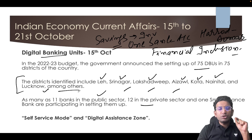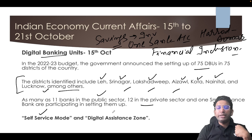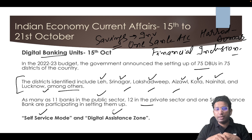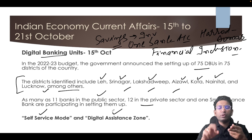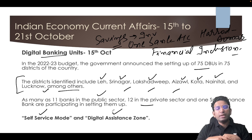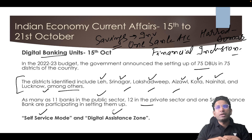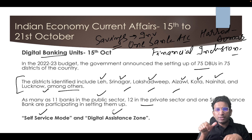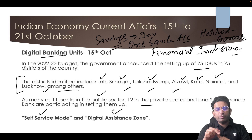In these digital banking units, the branch will be divided into two parts. One is called the self-service mode and the second is called the digital assistance zone. Currently we have multiple ways to do banking — internet banking, mobile banking, ATM banking, and various other services. In the self-service mode, machines will be installed where people can avail all banking services on their own — machines for depositing cash, ATMs for withdrawing money, passbook printing machines, and computers for online banking.